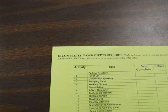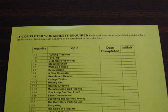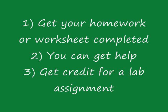You can also complete worksheets to get lab assignment credit. As part of your course grade, you will need to complete 15 worksheets for this class. The different worksheets are listed on the back of your Math Hub card. When you have completed a worksheet, bring it to the Math Hub and a staff member will date and initial the back of your Math Hub card. This will ensure that you get credit for completing the worksheet. If you spend at least 50 minutes completing the worksheet in the Math Hub, you will also receive credit for a lab assignment. Doing your homework is a great option — you get finished with your homework, you can get help, and you get credit for a lab assignment.